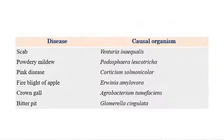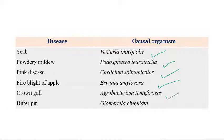The list of important diseases in apple includes: apple scab, caused by Venturia inaequalis; powdery mildew, caused by Podosphaera leucotricha; pink disease, caused by Corticium salmonicolor; fire blight of apple, caused by Erwinia amylovora; crown gall, caused by Agrobacterium tumefaciens; and bitter rot, caused by Glomerella cingulata.